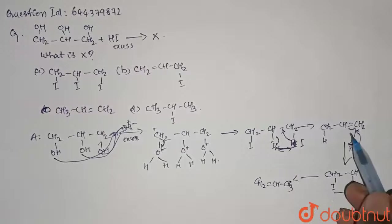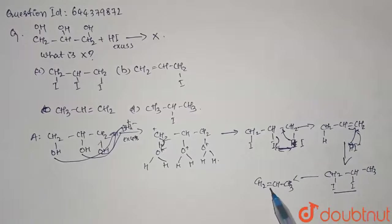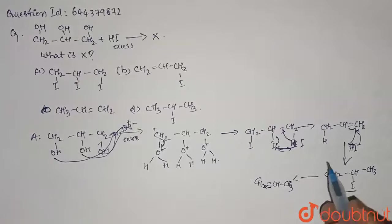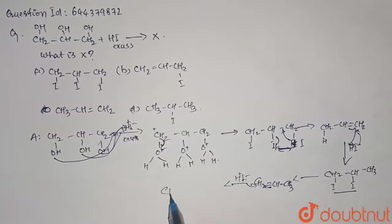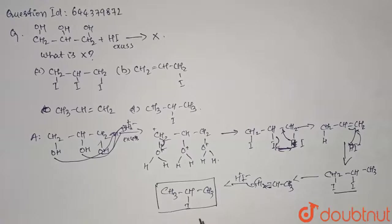Again, the similar process. The pi bond will shift to CH and attack the HI. That will become H plus, and then this I minus will react with C plus and form a compound CH3-CHI-CH3. So this is our final answer, which is option D.